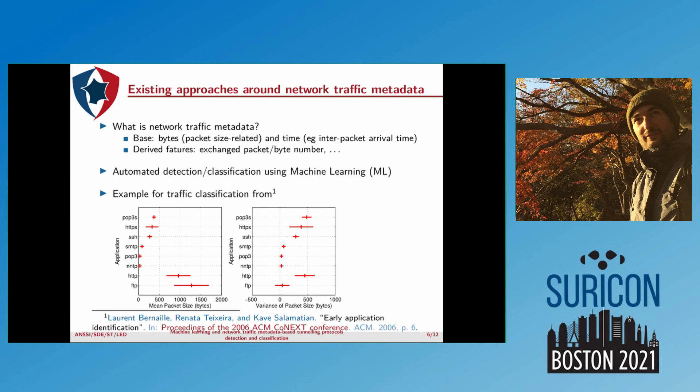Usually, you would use machine learning to automatically detect or classify instances using metadata. Here is a small example of traffic classification from an academic paper from the mid-2000s, presenting the mean packet size and the variance of the packet size. If you just look at the mean packet size, you can see that HTTP and FTP have much bigger values than all the other protocols. For the variance, HTTP has a much bigger value than FTP. So if you use machine learning on this, you can automatically build a model that will predict: if I have a value in this range, then I can say this is this kind of protocol.